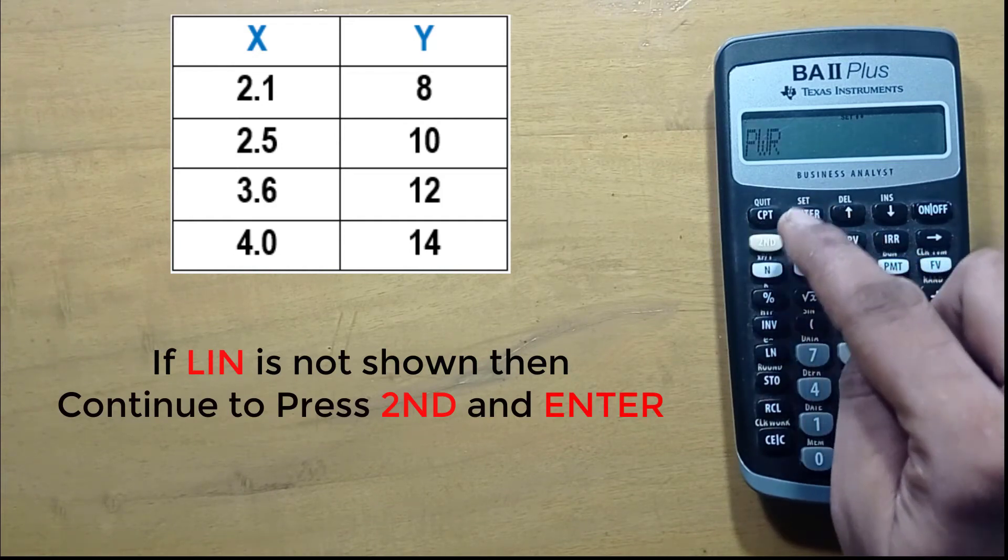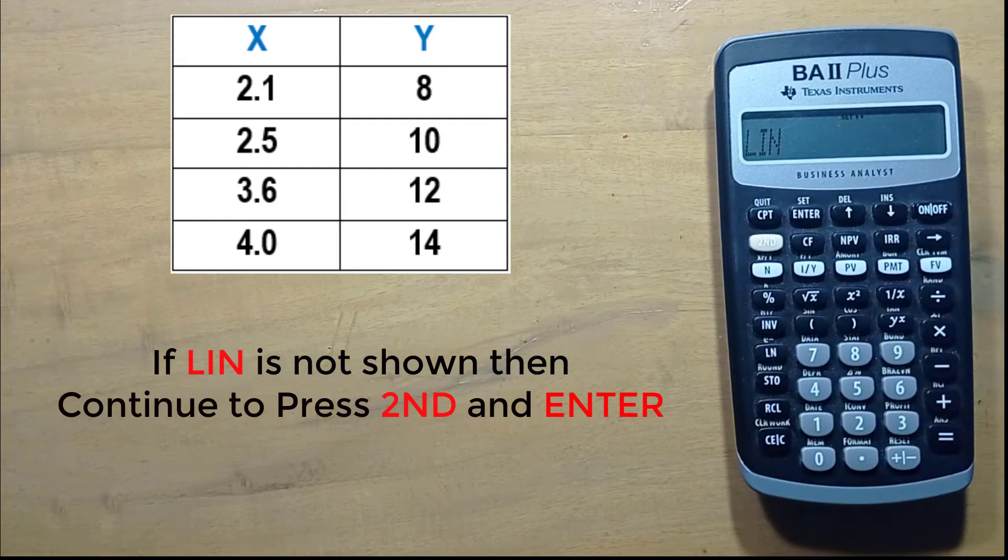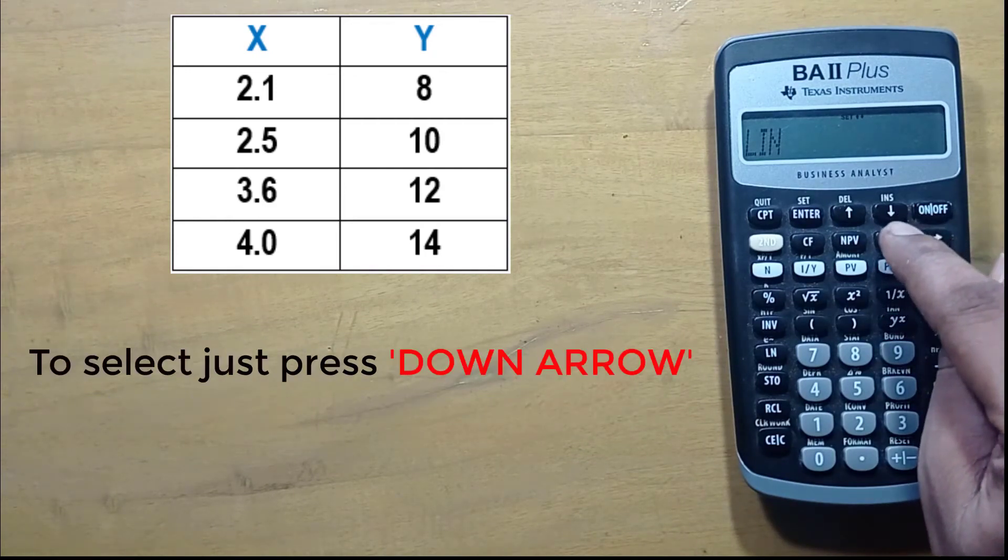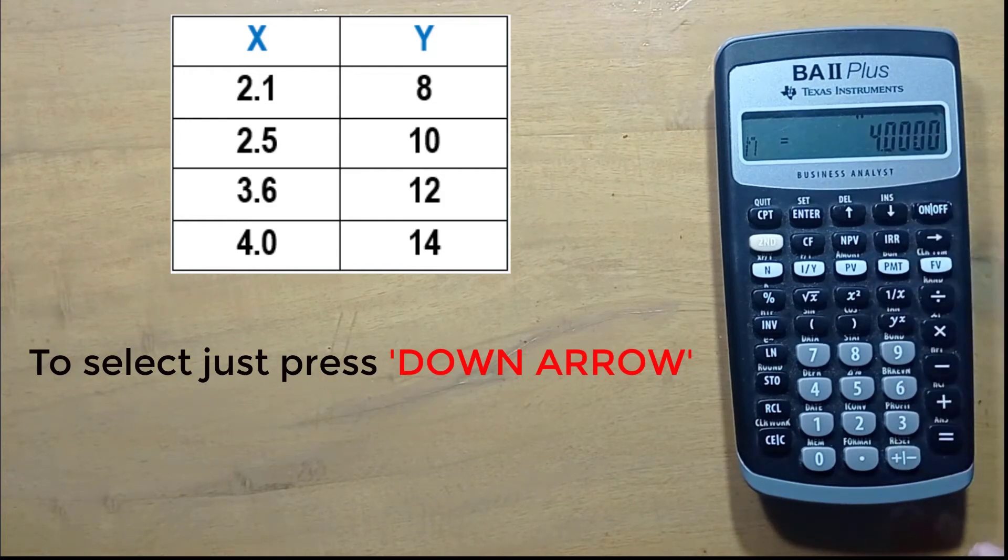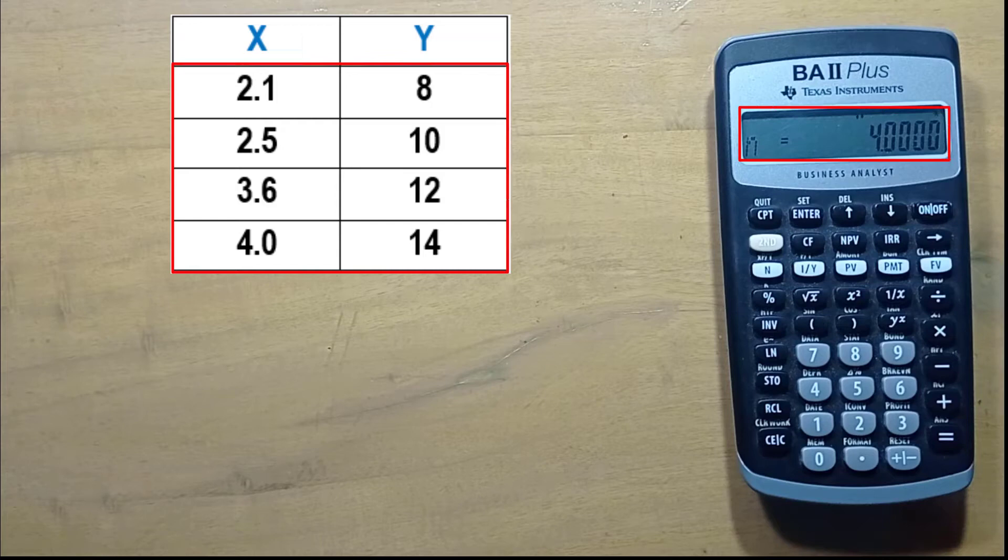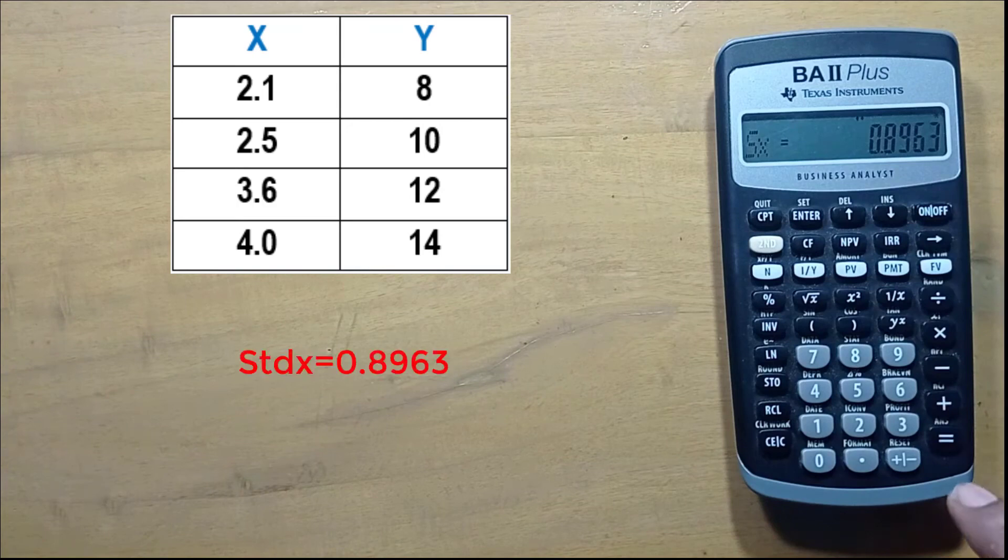Continue until you find LinReg for standard linear regression. Now press the down arrow button to select it. Here n equals 4, as we have entered 4 sets of values. Press down arrow. This is the mean. This is standard deviation x.